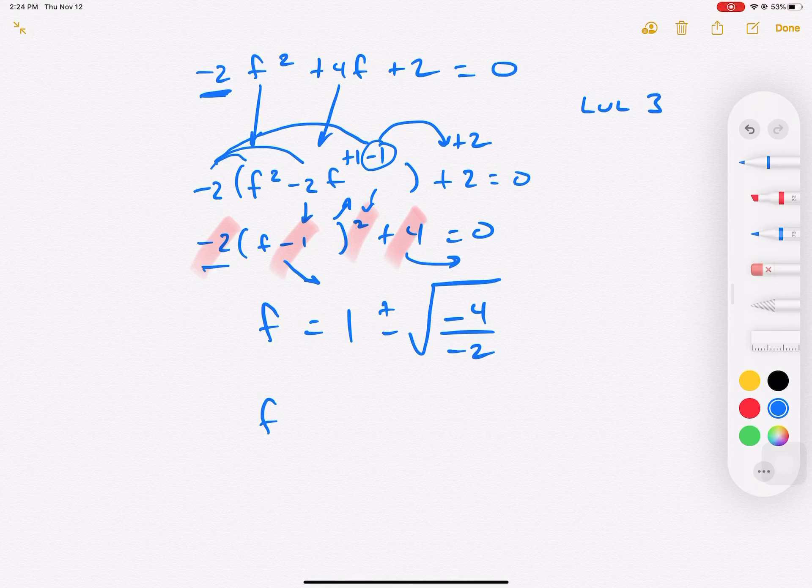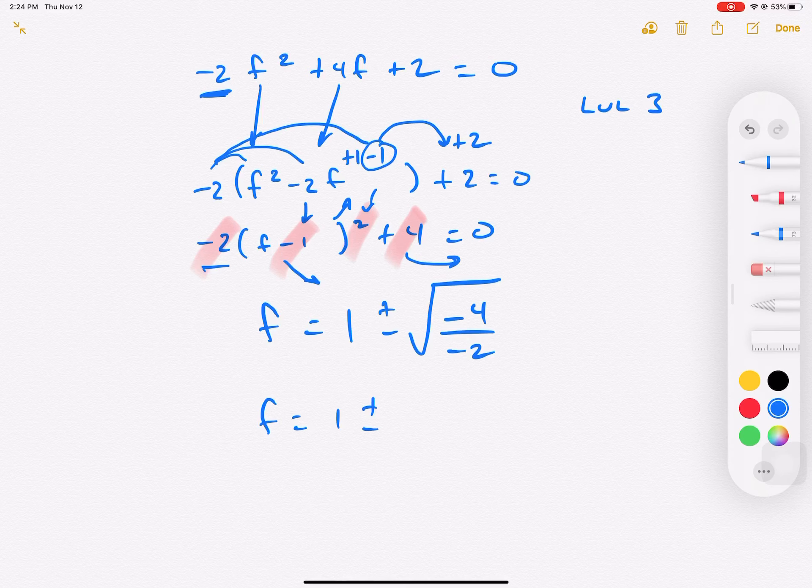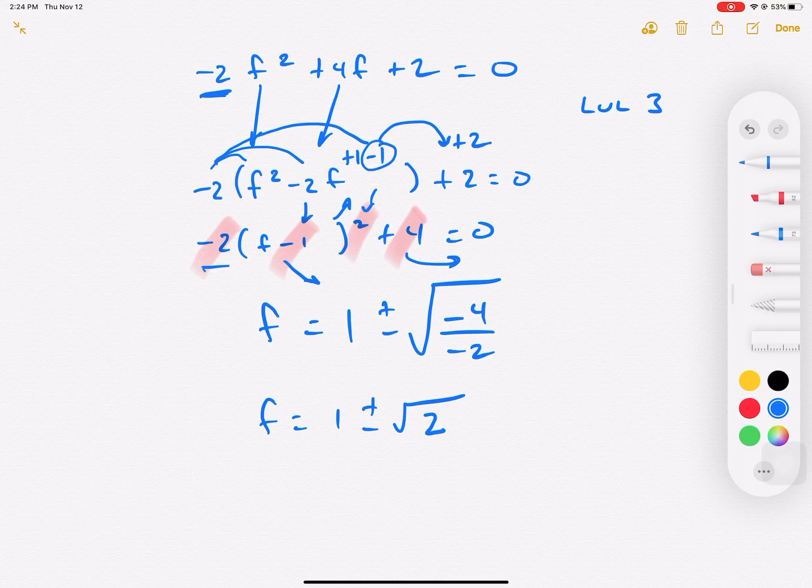Now we can simplify it. So f is equal to 1 plus and minus - we're going to simplify this to become a positive 2. So plus and minus square root of 2, because negative negative is a positive, and 4 divided by 2 is 2. And that's our answer.